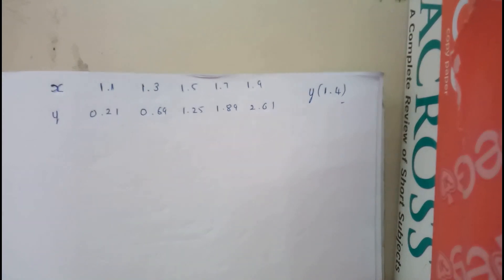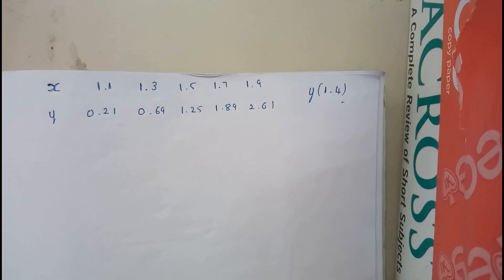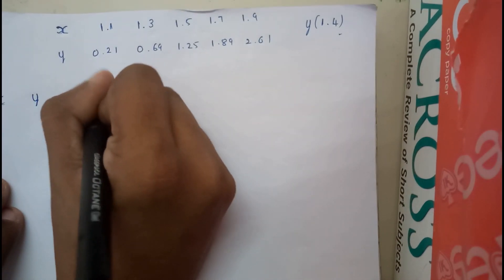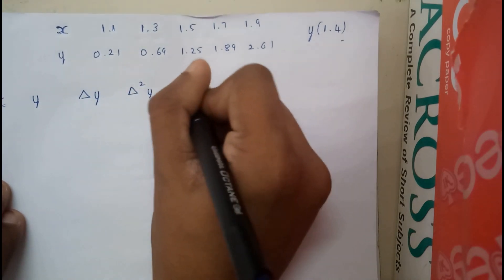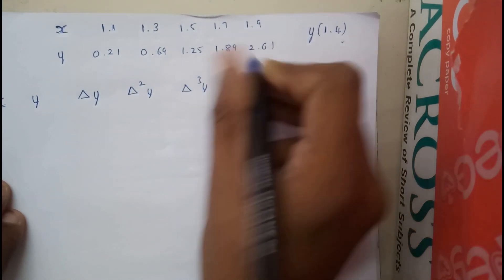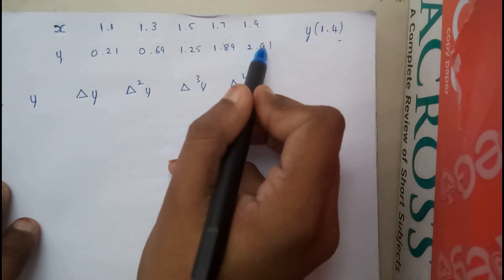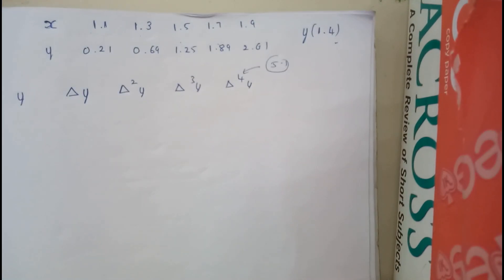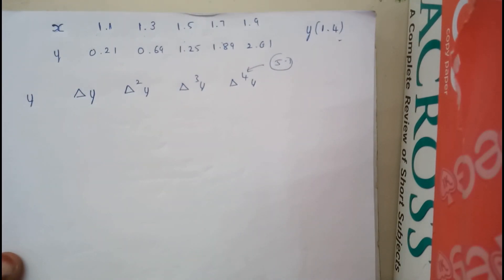We'll be constructing a difference table with columns: x, y, Δy, Δ²y, Δ³y, Δ⁴y. Since we have 5 data points, we need difference columns up to Δ⁴y — that's 5 minus 1 equals 4 — so no Δ⁵y is needed.